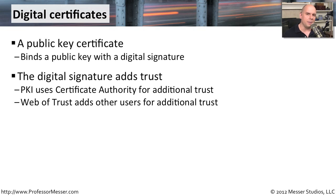There are two very common ways to do this. One is with a centralized certificate authority. There's one person in the organization that is in charge of creating the certificates. They confirm that you are really you, and they provide you with the certificates. Everybody who has a certificate can basically trust that that one central authority has confirmed that everybody is who they say they are.